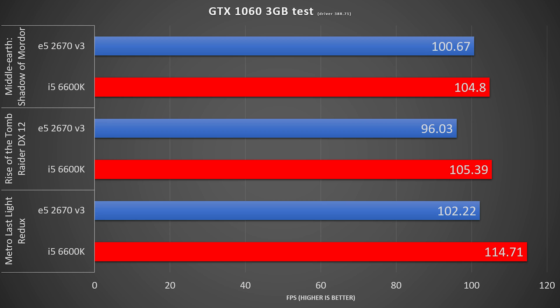It is well documented that games run faster on mainstream Intel platforms than on low clock speed Xeons, so I won't dive too much into that, but you're seeing some of my benchmark results on the screen. But this is not what this video mostly is about.